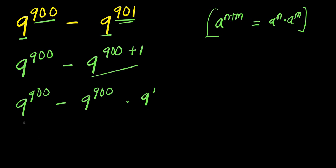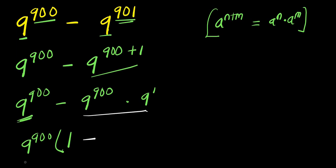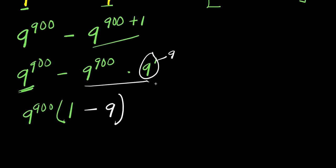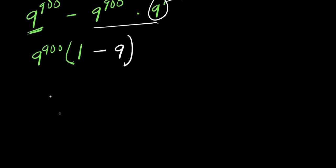From here I can factor out 9 to the power of 900. Dividing through by 9^900 gives 1, and the second term gives 9 because 9 to the power of 1 is 9. So I close the bracket and have 9 to the power of 900 times 1 minus 9, which is simply negative 8.